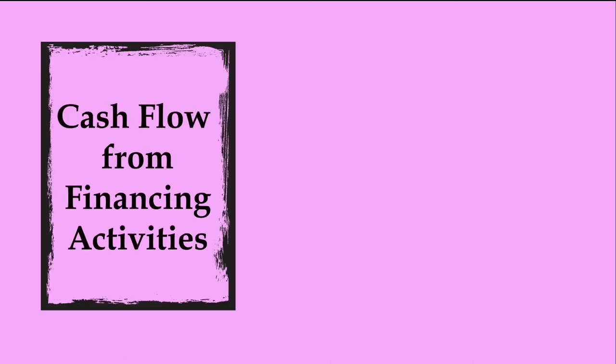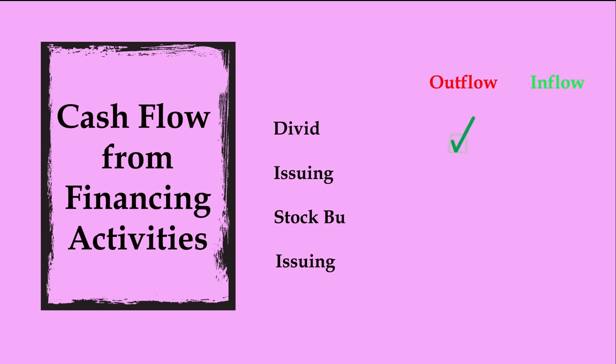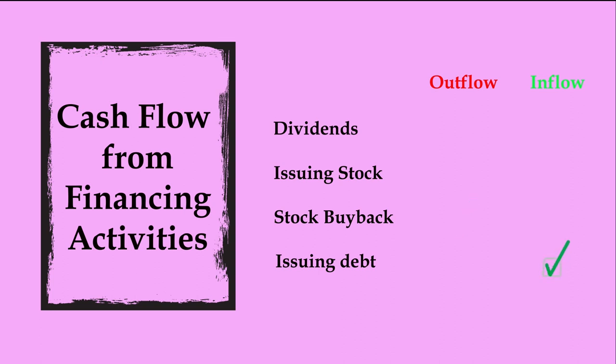Now that we've covered cash flows from operations and investing, the final section is cash flows from financing. This section tracks changes in the company's sources of debt and equity financing. Common financing inflows and outflows include: payment of common and preferred dividends (cash outflow), common stock issued (cash inflow), repurchased stock or stock buyback (cash outflow), and issuing debt (cash inflow).